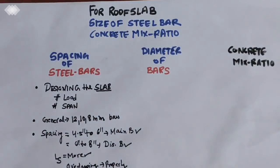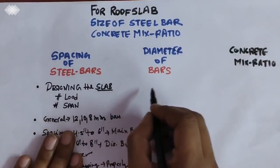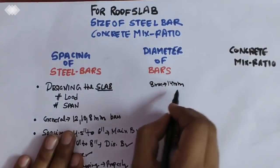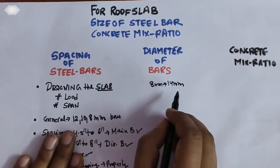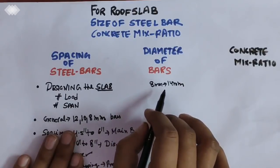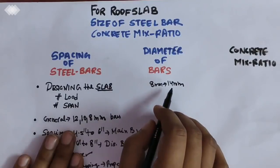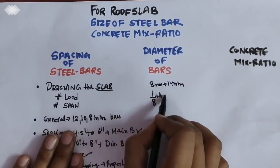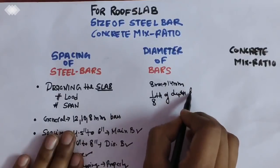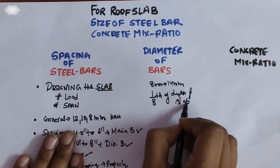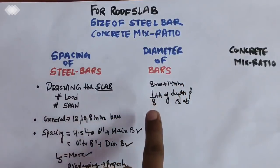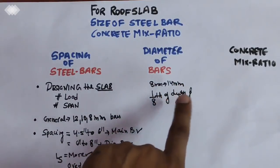The diameter of the main bars generally varies from 8mm to 14mm. The diameter of steel bars should not exceed one-eighth of the depth of the slab.